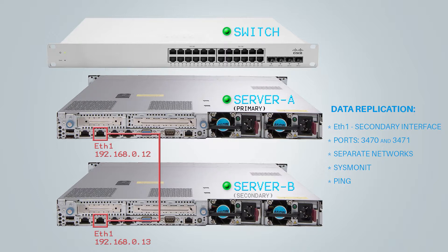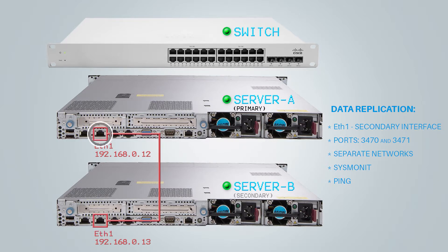With the help of sysmonit, DRBD knows if the communication between two servers is working. The secondary server constantly sends a unique ping to the primary server, and the primary server answers each ping received. This is how sysmonit knows that communication between the two servers is working and that the primary server is up.